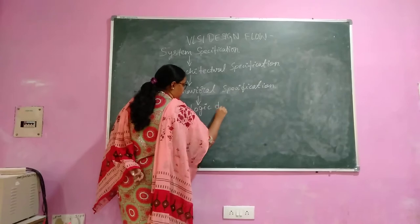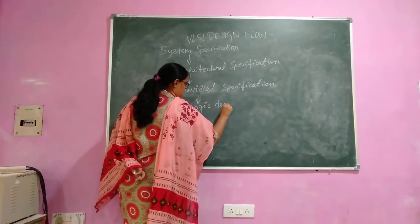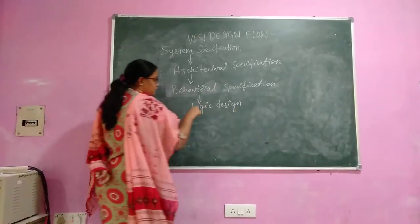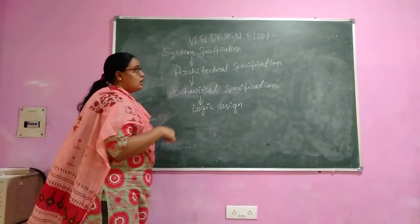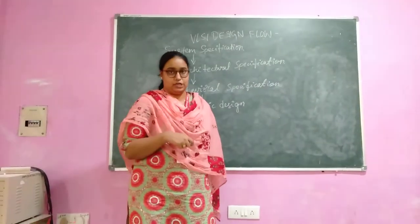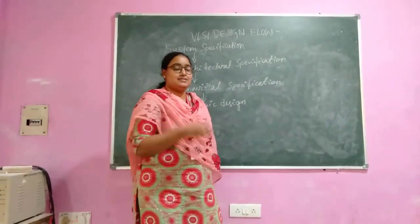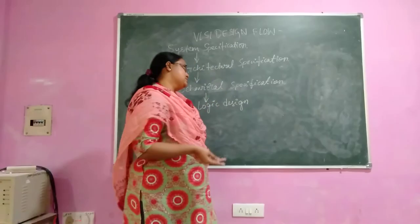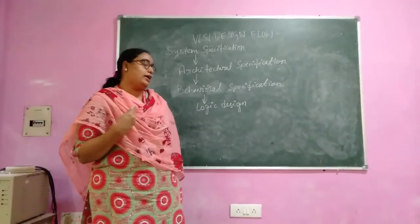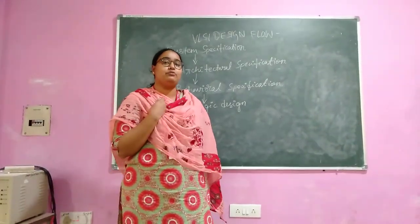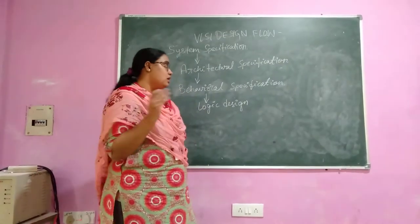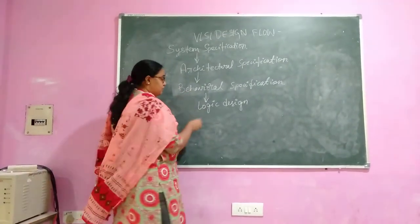After the behavioral specification, we have logic design. In logic design, if we have a multiplier component, we will decide what kind of multiplier it is, or what kind of multiplexer to use. All those decisions are made in this step.